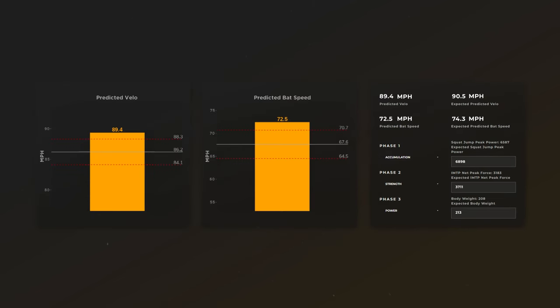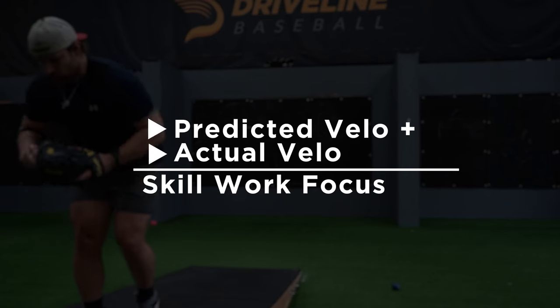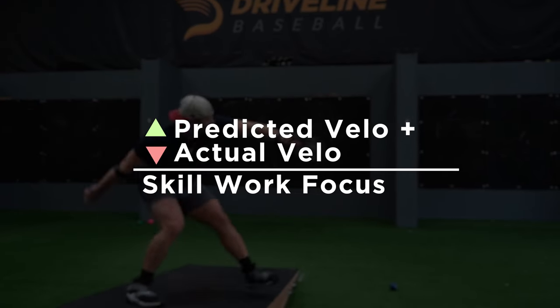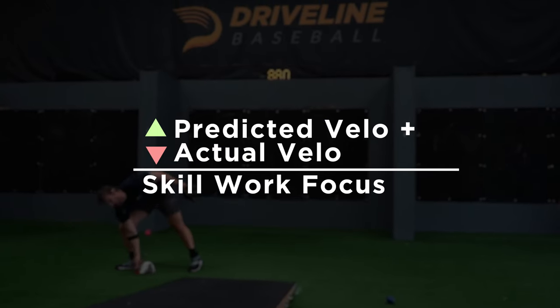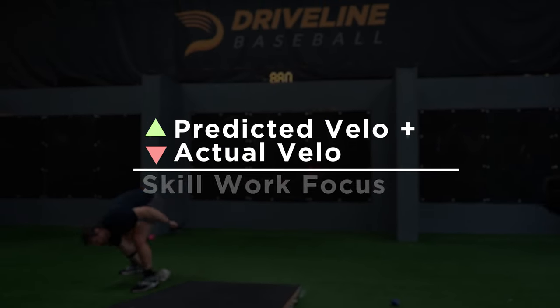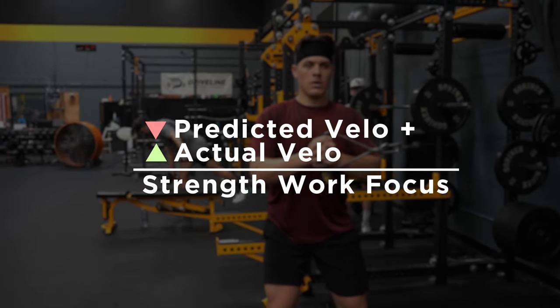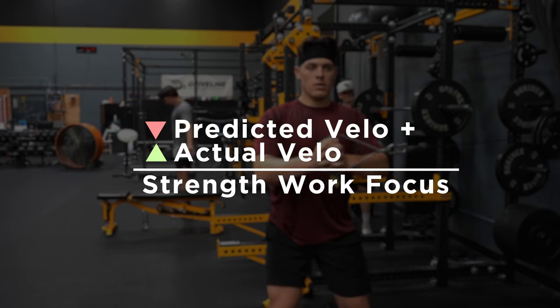We use your predicted skill numbers to determine where you should spend your training economy as an athlete. If you have a high predicted velo but a low actual velo, we're going to spend more time on the skill side than the strength side. If you have a low predicted velo and a high actual velo, we're going to do more strength work than skill work. If you don't possess the physical qualities to throw hard, it will be hard to ever throw hard regardless of your mechanics.